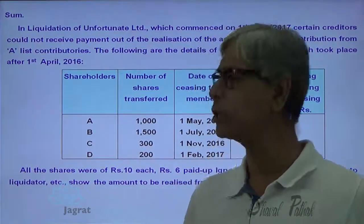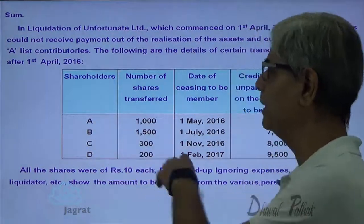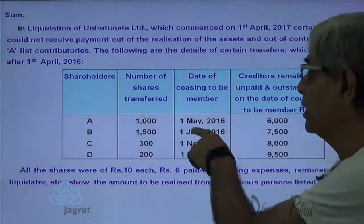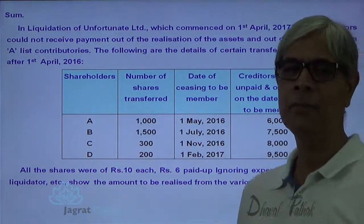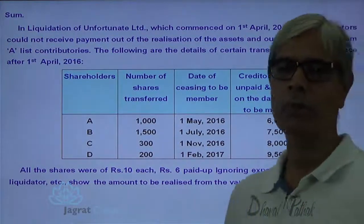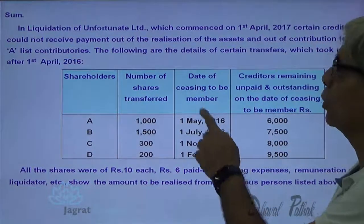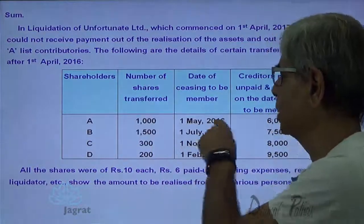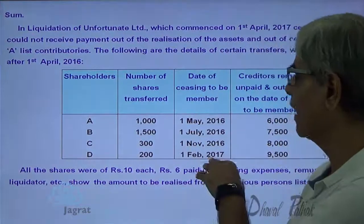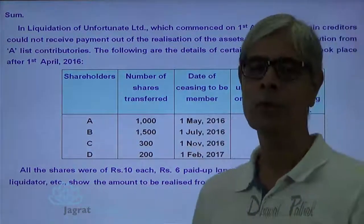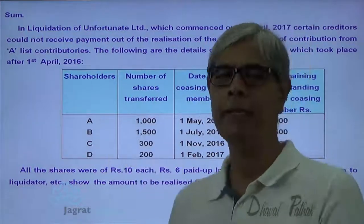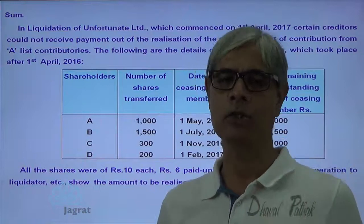List B contributories are also asked to pay the unpaid capital if List A contributory fails to pay. On the basis of this, the liability of List B contributories is to be determined. Shareholders A, B, C, D transferred shares on 1st of May 2016, which is within 1 year before the commencement of liquidation. Commencement of liquidation is 1st of April 2017, so 1st of May 2016 is after 1st of April 2016 — within 12 months. So all of A, B, C, D can be identified as List B contributories.